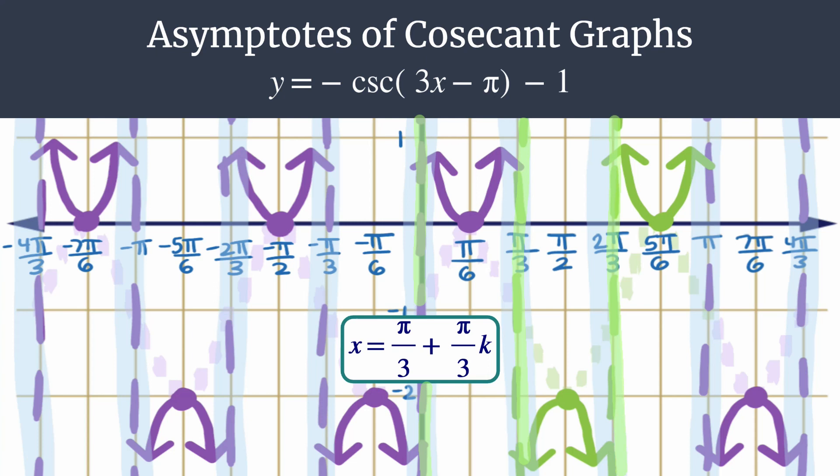If you kept going, if you let k equal 2, you would get this asymptote here at pi. You'd end up with x equals pi over 3 plus 2 pi over 3, so x equals pi. You could see that as you progressed increasing your k's, you'd keep getting the next asymptote to the right. Similarly, as you move to the left, you'd be decreasing your value for k.